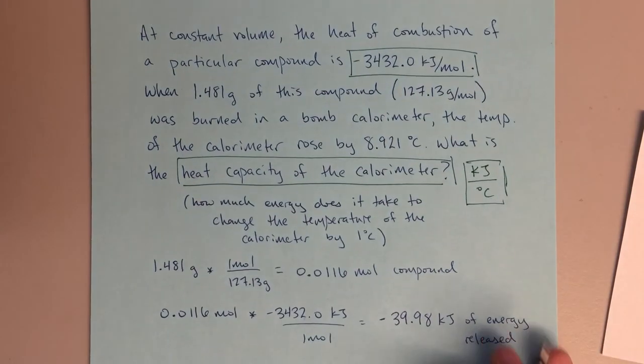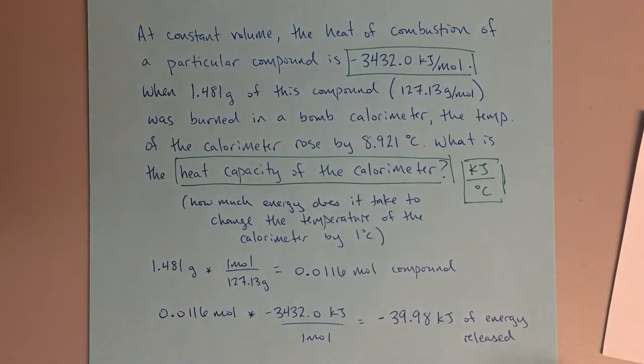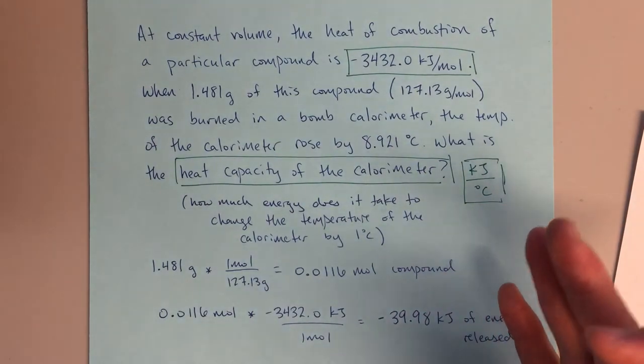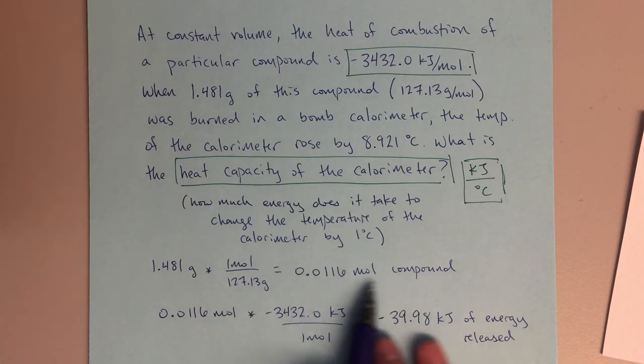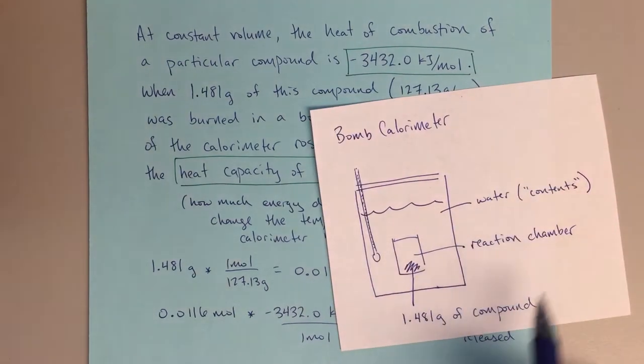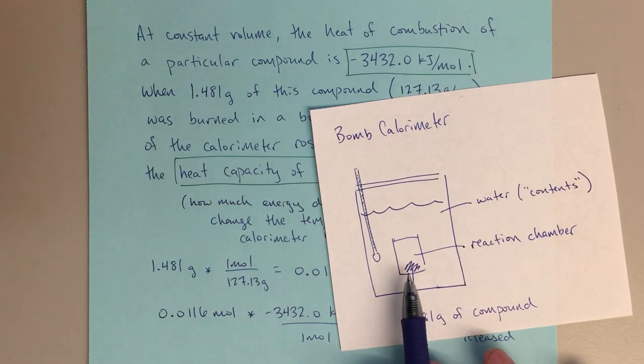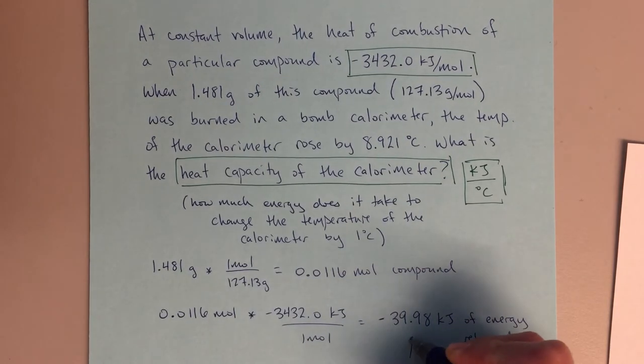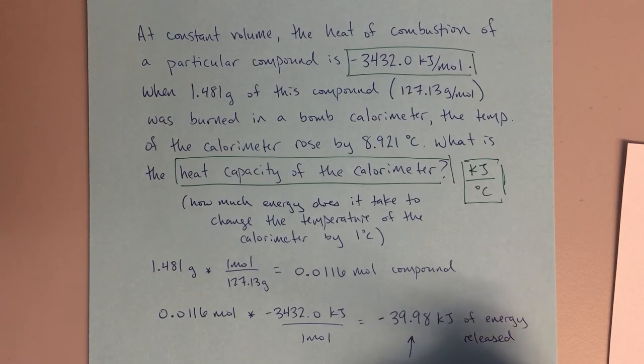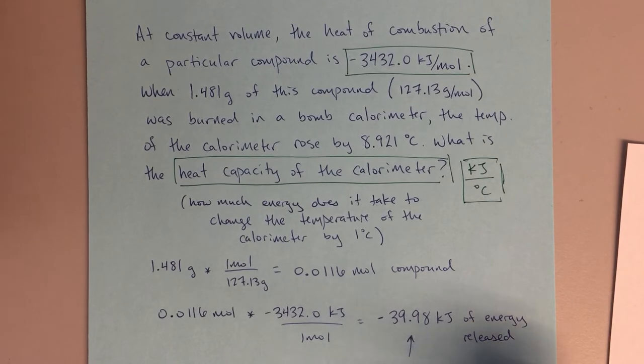So the first thing that I've done is using this heat of combustion information, sort of delta H type information, what's the Q value for this reaction? How much energy is actually evolved when I do this reaction with 0.0116 moles? That 0.0116 moles comes from how much I actually burned in my bomb calorimeter, the 1.481 grams. I'm going to burn it in the reaction chamber, it's going to evolve some heat. That amount of heat is minus 39.98 kilojoules of energy. This is really the Q value for the actual reaction of 1.481 grams of my compound.